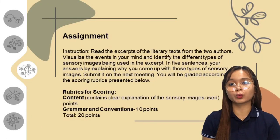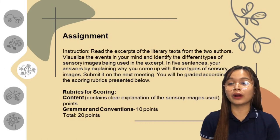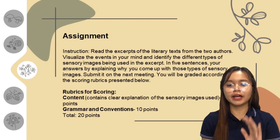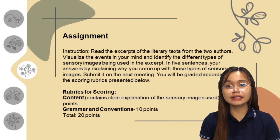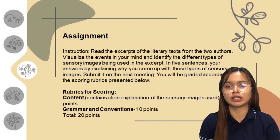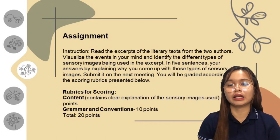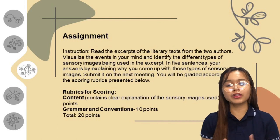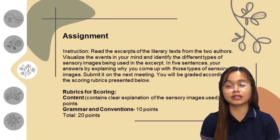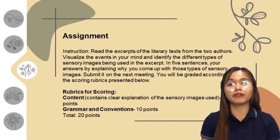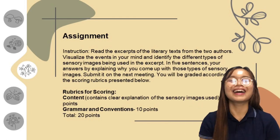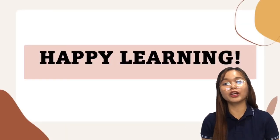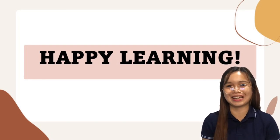For your assignment, you are going to read excerpts of different literary pieces from various authors and identify the different types of sensory images being used. In 5 sentences, justify your answers by explaining why you identified those types of sensory images. Submit on our next meeting. You are graded according to the rubrics: content — clear explanation of the sensory images used, 10 points; grammar and conventions — 10 points; for a total of 20 points. Thank you so much, class, for listening. I hope that you have learned a lot from our discussion today. Happy learning!